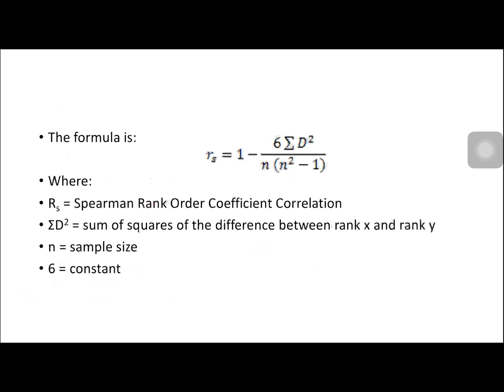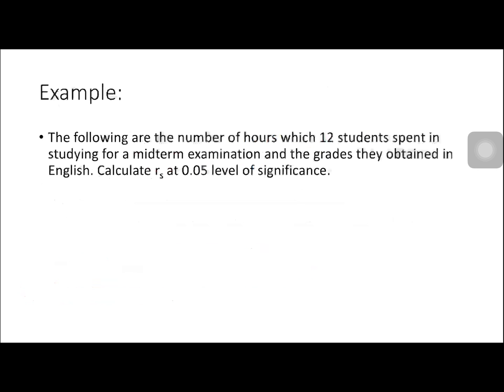The formula is: RS is equal to 1 minus 6 times the summation of D squared, over N times (N squared minus 1). The values 1 and 6 are constants.